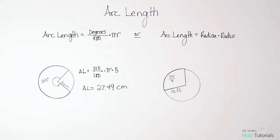Let's look at one where we need to find arc length but we're not given a degree. We're given a radian. So radian is another way to measure an angle.